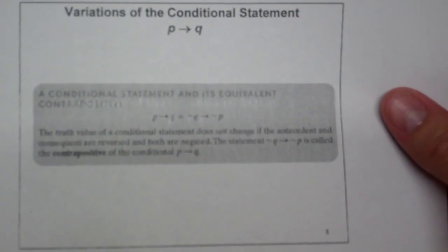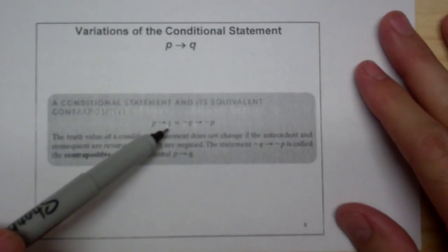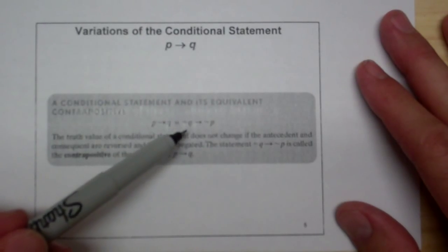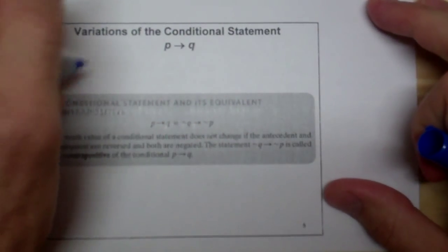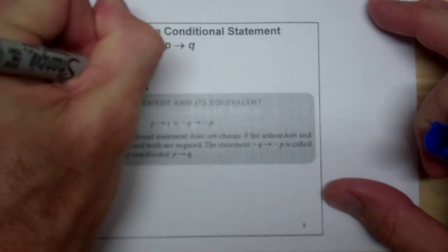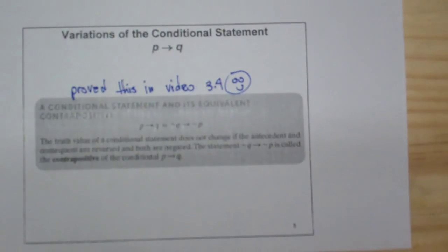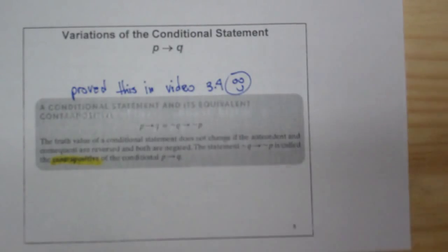Now we have our variations on the conditional statement. P→Q is logically equivalent — that's what the triple bar means — to ¬Q→¬P. We proved this in video 3.4. This is the definition of the contrapositive.